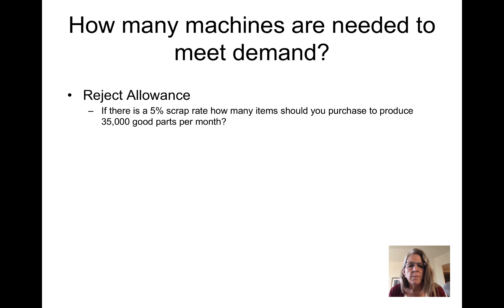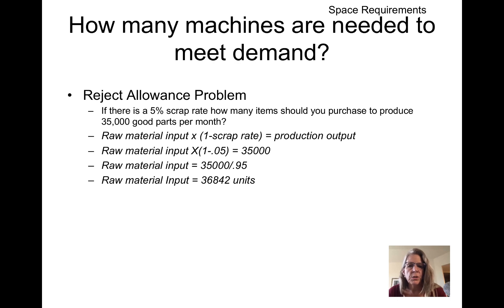When we're looking at reject allowance, this is an example. If there's a 5% scrap rate, how many items should you purchase to produce 35,000 good parts per month? The raw material input times 1 minus the scrap rate equals the production output. So the raw material input required is 36,842 in order to get 35,000 good parts per month.